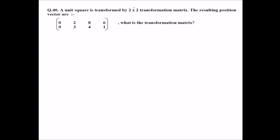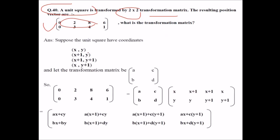So a unit square is transformed by 2 by 2 transformation matrix. The unit square is transformed by this transformation matrix. The resulting position vectors are this. So what is exactly the transformation matrix? Now unit square given, the output given, we have to find out the transformation matrix.